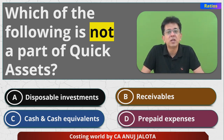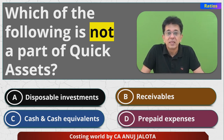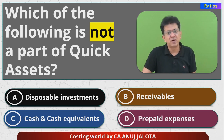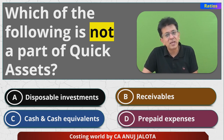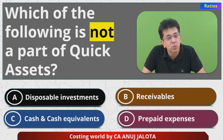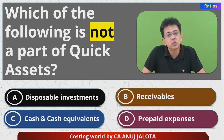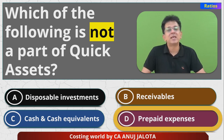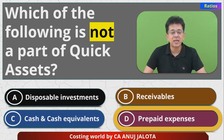Prepaid expenses cannot be converted into cash — it is mostly not possible. They are a current asset for sure, because within one year you would have been paying them anyway, so paying in advance makes it your asset. But it cannot be converted back into cash. Therefore the answer is D — prepaid expenses. That's the correct one. Thank you, bye.